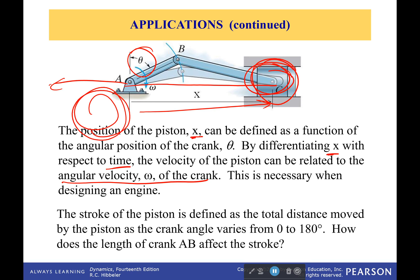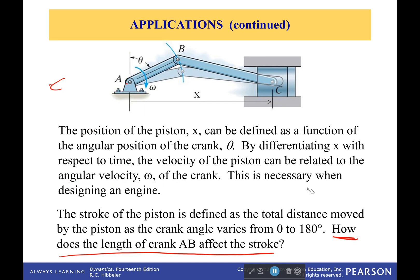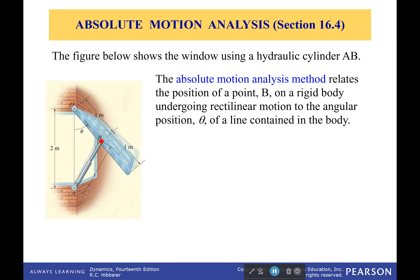So for example, in an engine the stroke of the piston is defined as the total distance moved as a crank angle varies from 0 to 180 degrees. So how does the length of the crank AB affect the stroke right here? How does that affect the stroke? I'm not going to tell you—that's one of the things I want you to work on your own. Just write it down, draw some pictures and see what you come to. This is one of those times where graphing paper is actually really helpful, so maybe try it out.